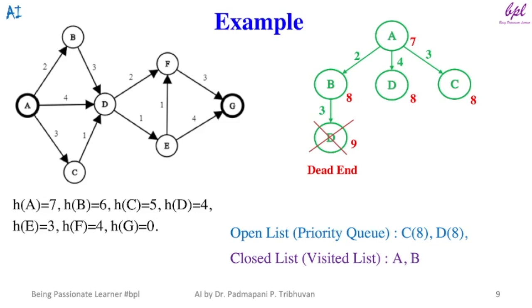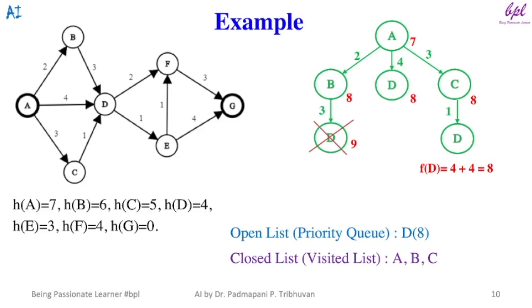Now node C will be selected. C is not a goal node, so it will be explored and added to the closed list. C has only one successor, node D. Its f value evaluates to 8 using the evaluation function. We now have another path to node D through node C, but its evaluated value equals the direct path value, so D's value in the open list will not be updated and the path through C is considered a dead end.